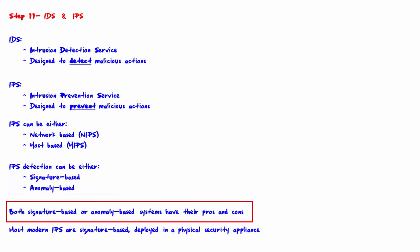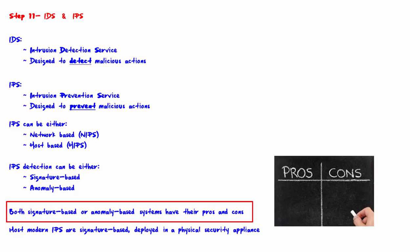Both signature-based and anomaly-based systems have their pros and cons. Signature-based pros: low false positives. Signature-based cons: can only detect exploits for which a signature exists, so signatures must constantly be updated. Anomaly-based pros: does not need to be constantly updated. Anomaly-based cons: high false positives.